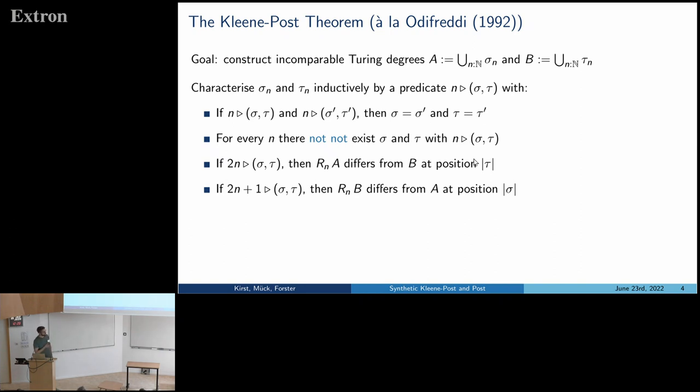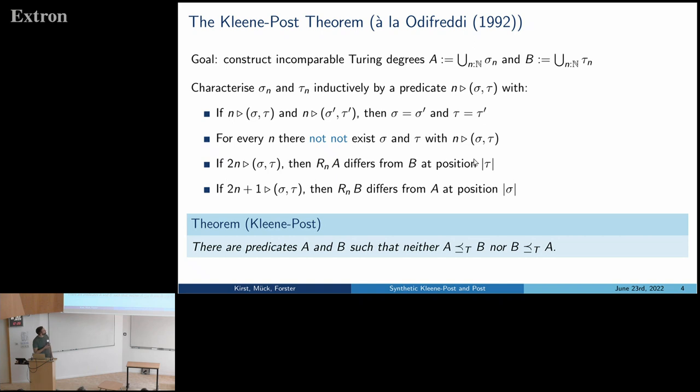And now what we actually want about this construction is that we can clearly diagonalize against the behavior of the nth oracle machine, so we make sure that we never, by accident, find an oracle machine transforming A into B or in the other direction. And we make this in the sense that in every even step, we make sure that at a concrete position, the behavior of r of n will differ on input A from B, and conversely in every odd step, we do it in the opposite direction. And if we manage to prove this property, then it's an easy conclusion to derive the Kleene-Post theorem because if we were assuming a Turing reduction, for instance, from A to B, this would be the nth Turing reduction in the enumeration, but then we know that we must differ from it at some position. All right.